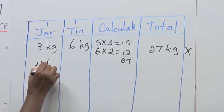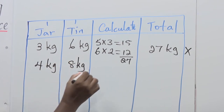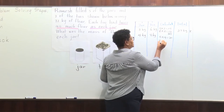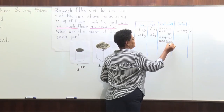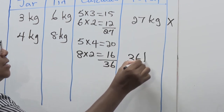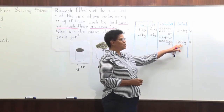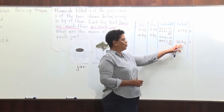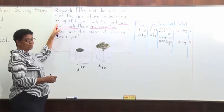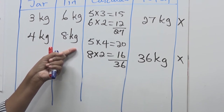So I'm going to move it up to 4 kilograms, which means the tins would be 8 kilograms. My calculation would show that 5 multiplied by 4 equals 20, and 8 multiplied by 2 is equal to 16, giving us 36 kilograms. So even though 36 is not correct, we can see that 36 is half of 72. So if we double our amounts, we are going to get the answer.